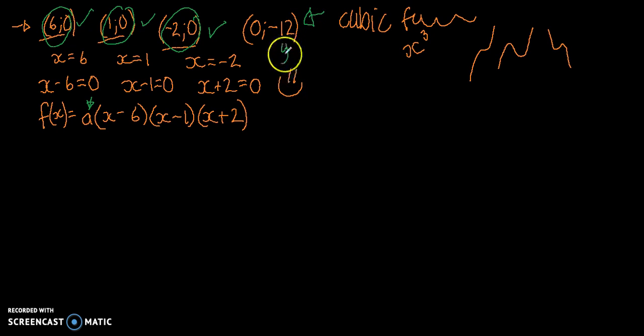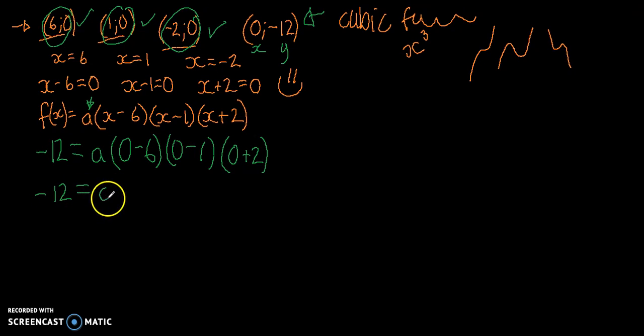So we're going to substitute negative 12 in for y, and then for x, we'll substitute 0. So let's write that down. Negative 12 is equals to a, because we still don't know the value of a, and that's what we're calculating now. So that means that negative 12 is equals to a times negative 6 times negative 1 is 6, times 2 is going to be 12. So therefore, a is equals to negative 1.